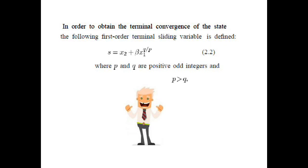In order to obtain terminal convergence of the state variables, the following first order terminal sliding mode variable is defined as given in equation 2.2. S is the terminal sliding variable and it equals X2 plus beta times X1 raised to the power Q over P, where P and Q are positive odd integers and P is always greater than Q. This defines a non-linear sliding surface.